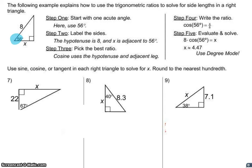Step two says we're going to label our sides. The side up here is my hypotenuse, and the side down here at the bottom is my adjacent because it's next to the angle. So I'm going to look for a ratio that has adjacent and hypotenuse in it. Cosine is going to be our function of choice here. Our ratio is cosine of the angle equals adjacent over the hypotenuse, so cosine of 56 degrees is equal to x divided by 8.